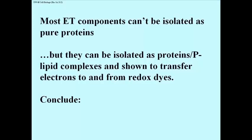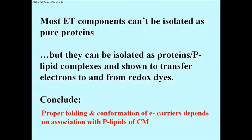But it is possible to isolate phospholipid-protein complexes that do retain biological redox activity. This can be demonstrated by adding electron donors, or reduced substrates, to these complexes in the presence of a redox dye — a chemical that turns color when it accepts electrons. The substrate donates electrons to a phospholipid-protein complex, which in turn donates those electrons to a dye that changes color, allowing you to see the reaction. These observations led to the conclusion that the proper folding and shape of electron transport proteins depends on their correct association with cristae membrane phospholipids.